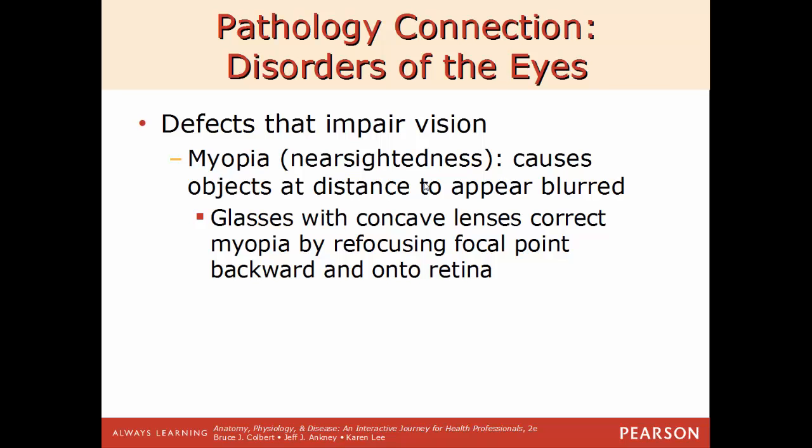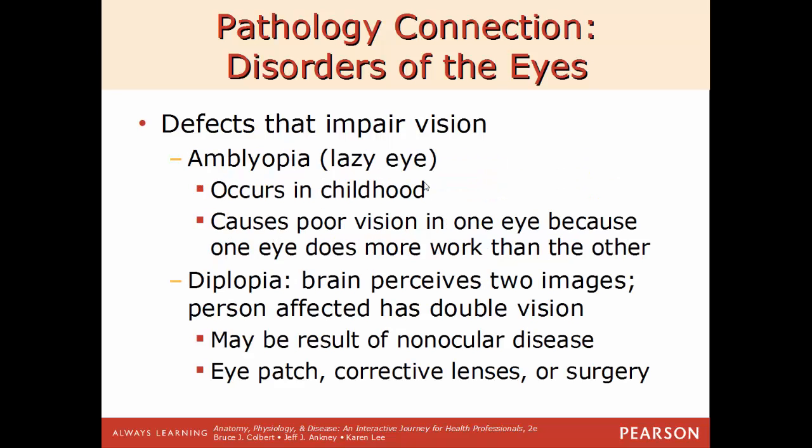Myopia or nearsightedness is where you can see things up close clearly but not things far away — corrected by wearing glasses with a concave lens. Amblyopia or lazy eye often occurs in childhood, causing poor vision in one eye because one eye works harder than the other. Diplopia is where the brain receives two separate images — double vision — which can result from binocular disease and is treated with corrective lenses, surgery, or an eye patch. Strabismus is where one eye is misaligned due to the inability of the muscles to coordinate movement, usually affecting children due to a congenital defect.